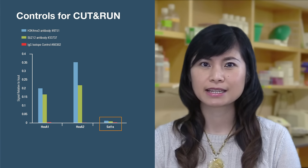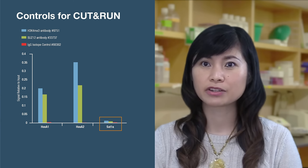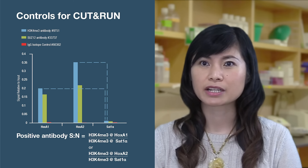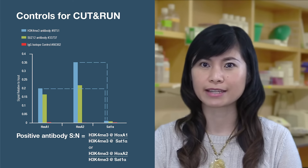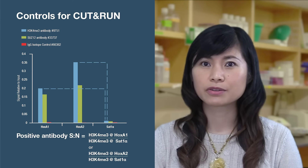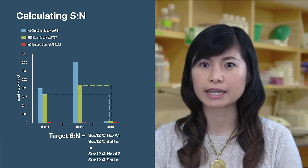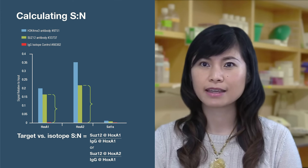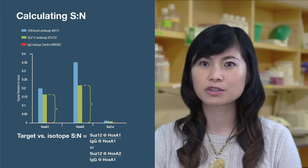For qPCR analysis, select a primer set for a region of the genome where your protein does not bind, as an additional negative control. Check signal strength and signal-to-noise ratio for the positive antibody to confirm the assay is working well in your hands. This signal-to-noise is calculated by dividing the signal from the positive primer set by the negative primer set. Next, calculate signal-to-noise for your target antibody, again by dividing positive and negative primer sets. Then calculate the ratio of the target antibody to isotype control measured at the same primer set. All of these ratios should be 3-to-1 or higher.